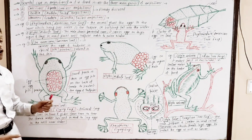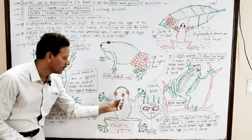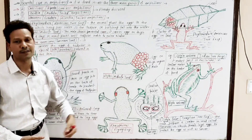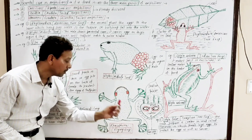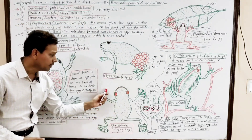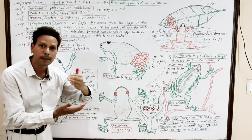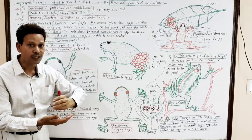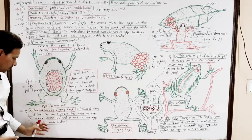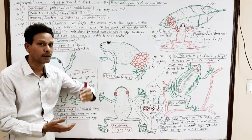The next example is Rhacophorus, the flying frog. As shown in the diagram, Rhacophorus has an arboreal life, living on trees, and glides from tree to tree. The female prepares a nest in shallow water mud near the border of the pond. Rhacophorus shows parental care by protecting the eggs in this special nest produced by the female frog.